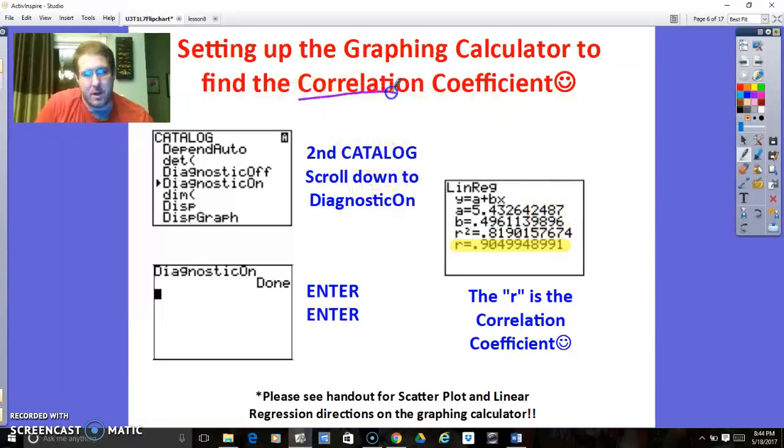Now, how do you find correlation coefficient? Unfortunately, you can't do it by hand. You need to use a graphing calculator. This is why you're supposed to buy a graphing calculator, not just a regular calculator. So the way you do it is, first of all, you need to turn diagnostics on. And the way you do that is by pressing second catalog. And catalog, I believe, is on the zero. So really this is second zero.